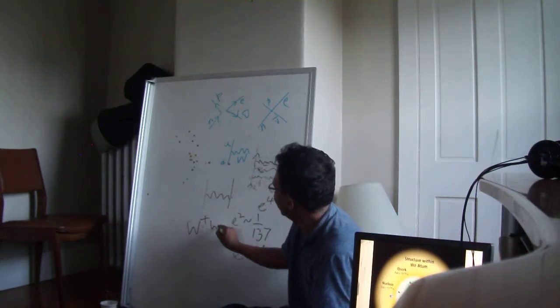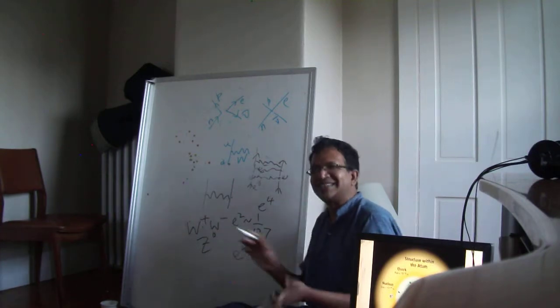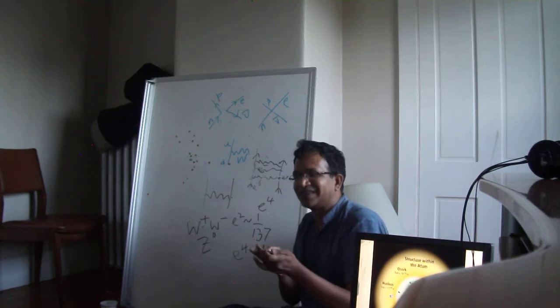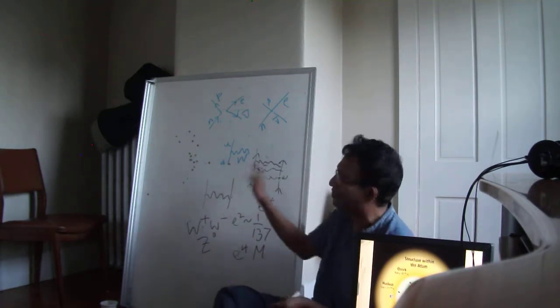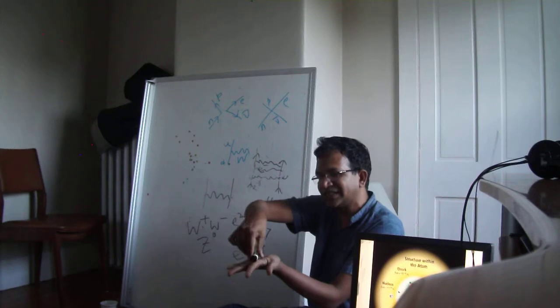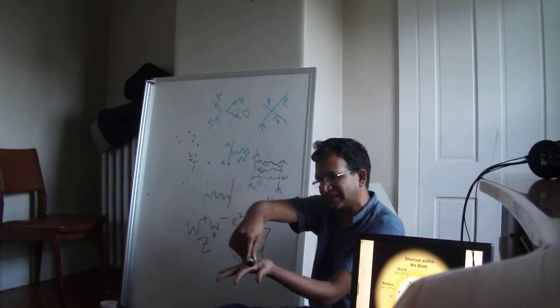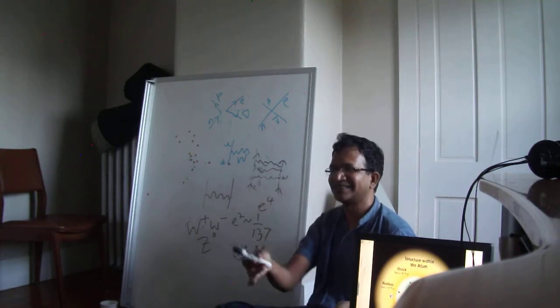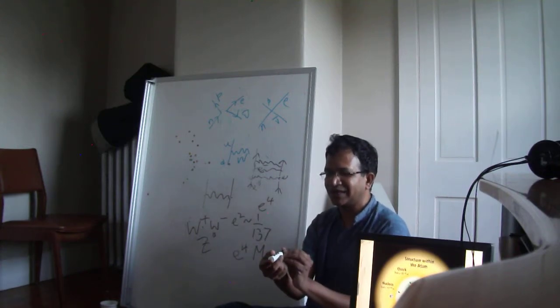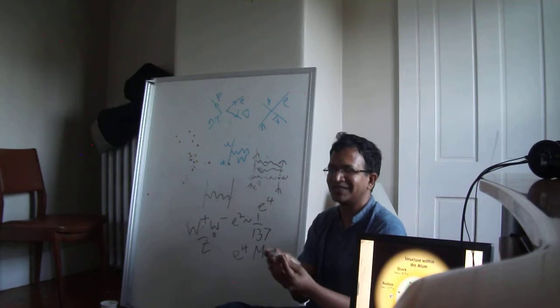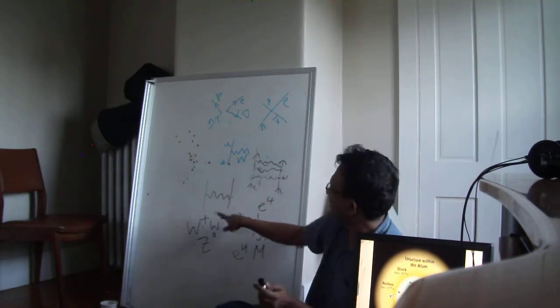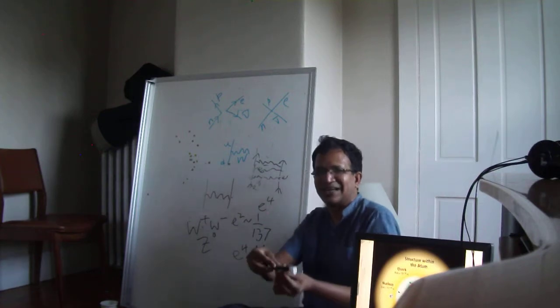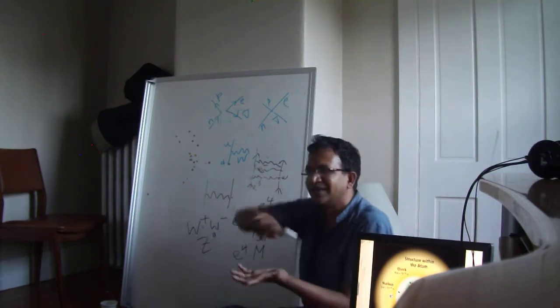For W plus, W minus and Z naught, these are also very similar to electromagnetism. I just want you to see the unity of thinking, like you are explaining every force in the same way. Here it's not rotation just in one plane, but it's a rotation that can happen in all directions. Which means that one particle is responsible for this rotation, one for that rotation. And so those are the W plus, W minus and Z naught.